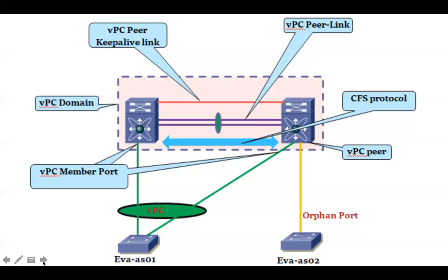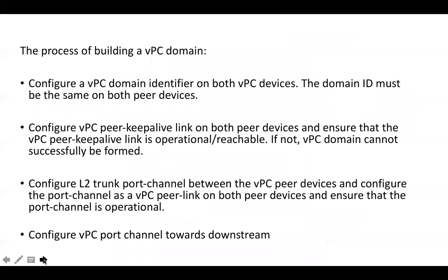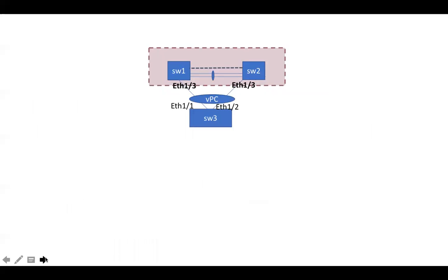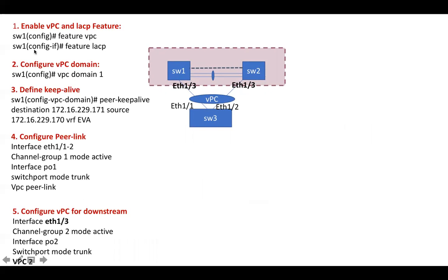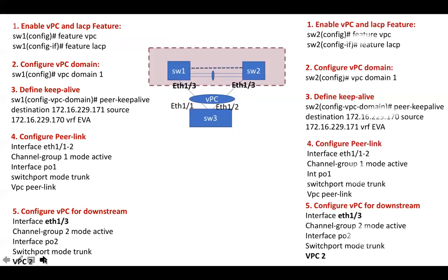The combined port channel between VPC peers and downstream devices will be known as VPC. To form a VPC domain, we define the VPC domain, then the keepalive link, then configure the peer link, and then configure VPC for downstream devices. We have enabled the VPC and LACP features, configured the VPC domain, defined the VPC keepalive, configured the peer link, and downstream configuration for VPC. The same configuration will be done on Switch 2.